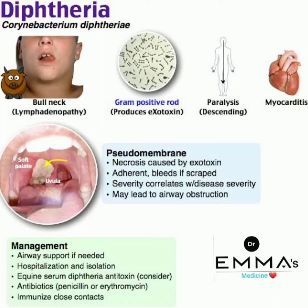In this video I am discussing diphtheria. Diphtheria is caused by Corynebacterium diphtheriae. Looking at the first image, bull neck lymphadenopathy is present. It is a gram-positive rod that produces an exotoxin, causing descending type paralysis.